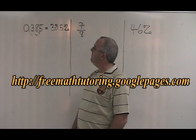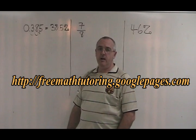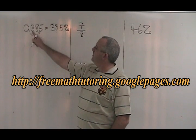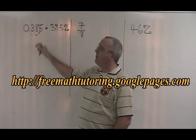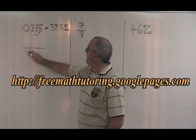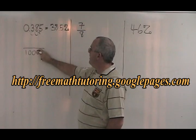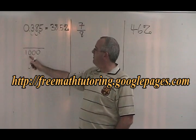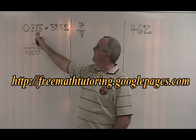To convert 0.385 to a fraction, we start by counting how many digits we have after our decimal. There are three. So we put a fraction line and we put a thousand underneath it. We put a multiple of 10 that has three zeros, one for each of these digits.